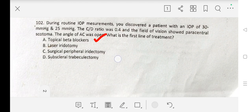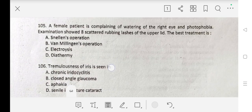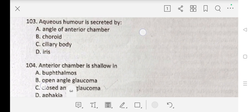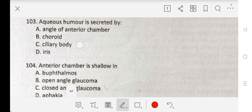Question number 103 is: Aqueous humor is secreted by A. angle of anterior chamber, B. choroid, C. ciliary body, D. iris. Our correct answer is C. ciliary body.